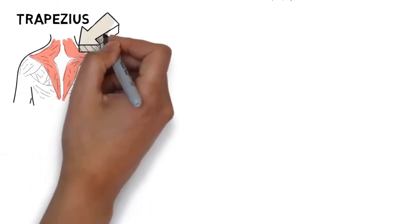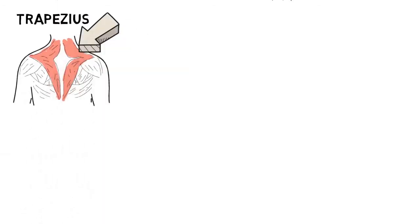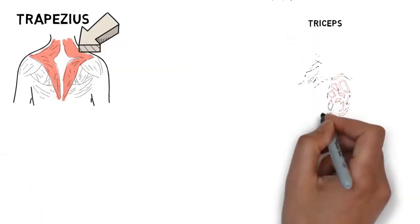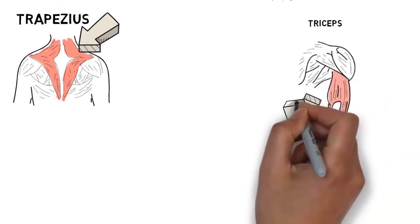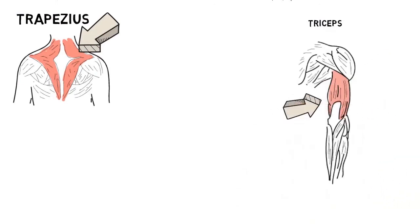Trapezius. Pull-ups work this grouping behind the neck and back of shoulder. Triceps. Press-ups work these as well as the pectorals.